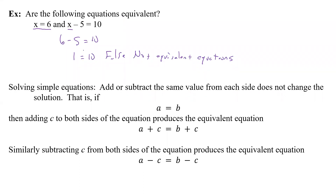So how do we actually solve an equation? To solve simple equations, we're going to add or subtract the same value from each side, and when we do that, it doesn't change the solution. If we start with a equals b, we can add c to both sides and get an equivalent equation. We simplify that down to get our final answer. As long as we add the same thing to both sides, we're good.